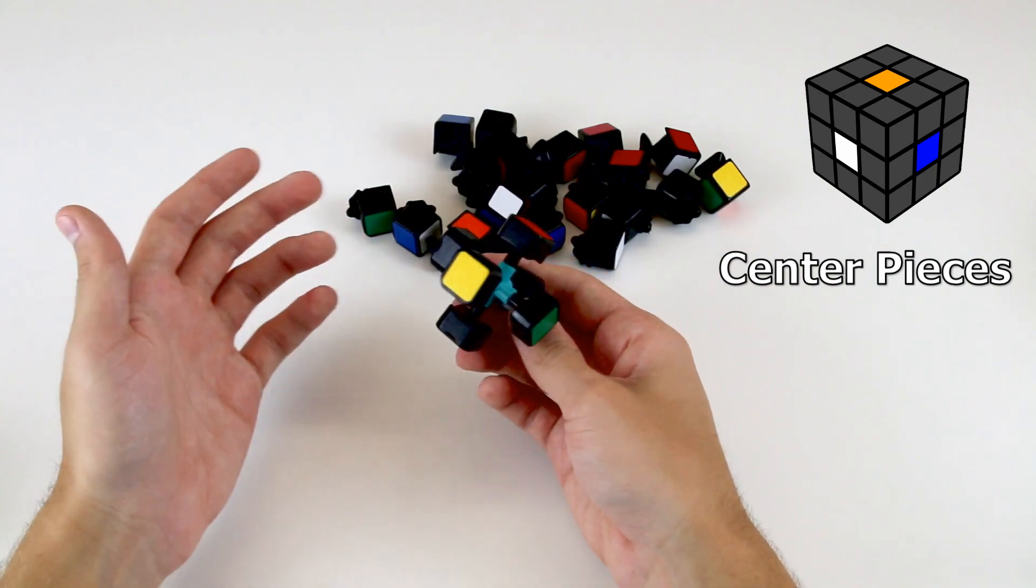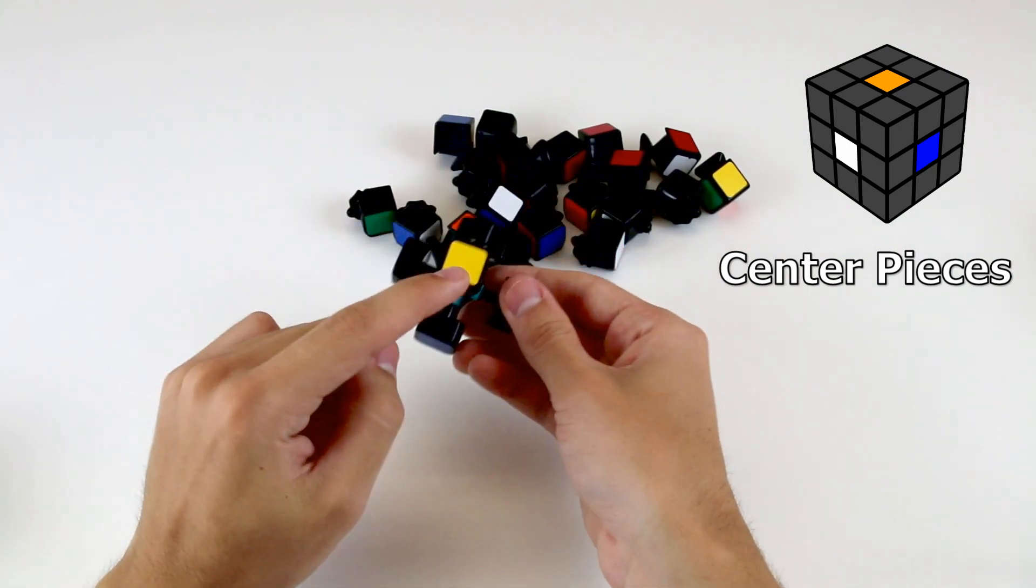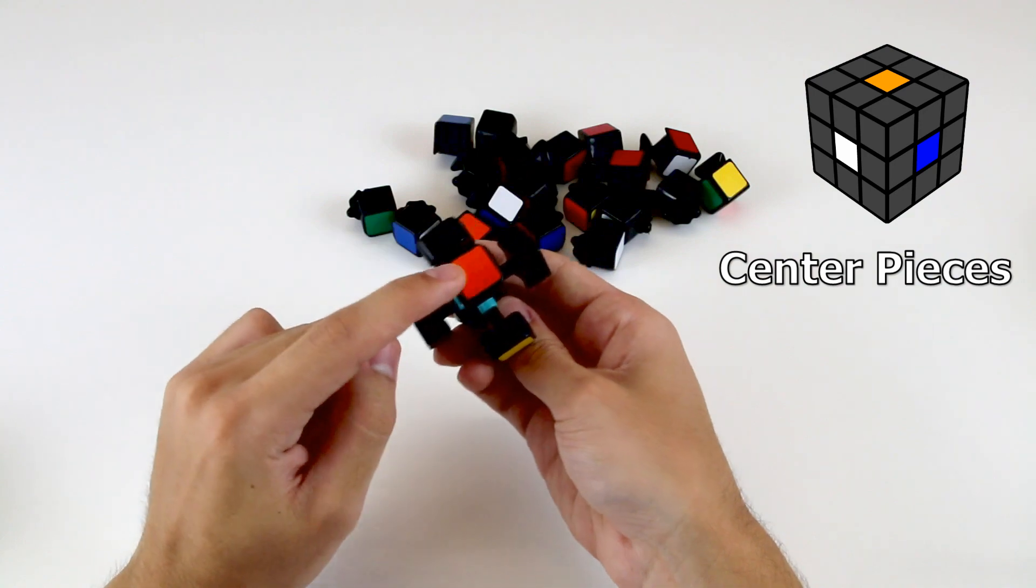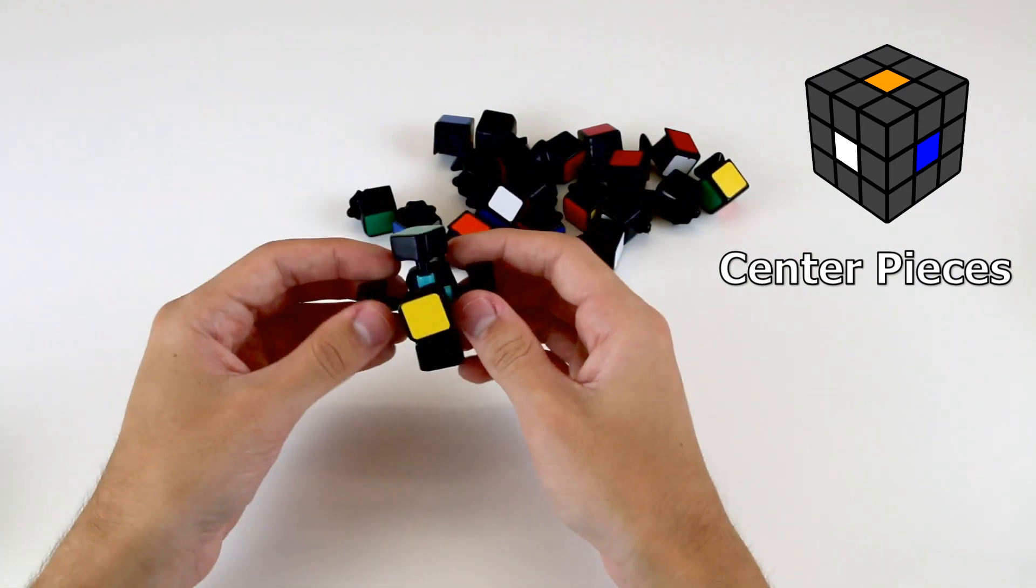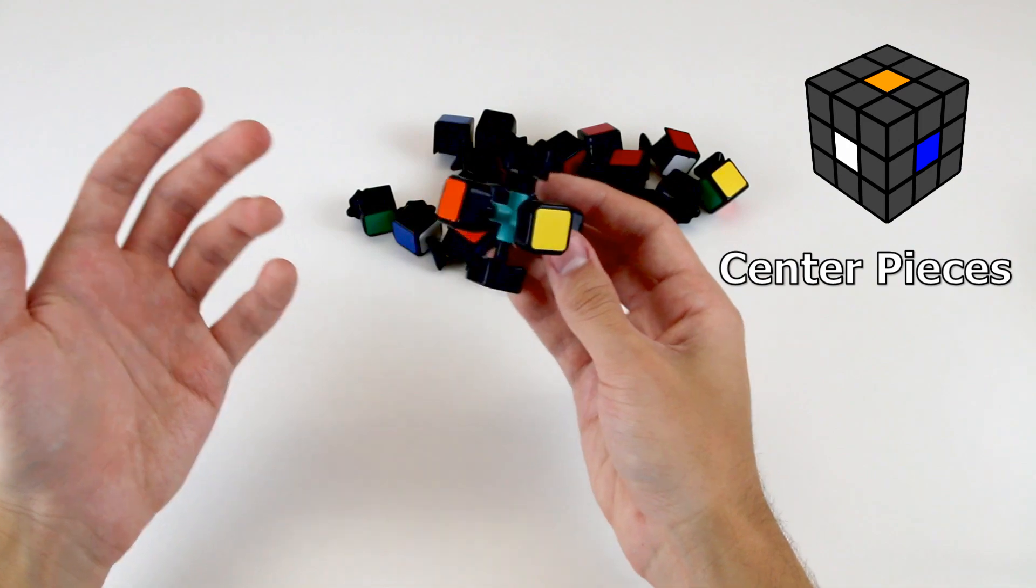Notice also, similar to what I described before, that the white center piece remains opposite the yellow center piece, and the same goes for the other color pairings. So these centers don't move, and they can be thought of as already solved.